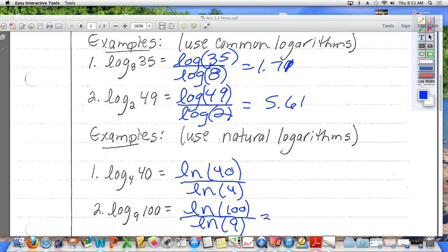What is the ln of 40 divided by the ln of 4? 2.66. And then ln of 100 divided by ln 9, what is that? 2.09.